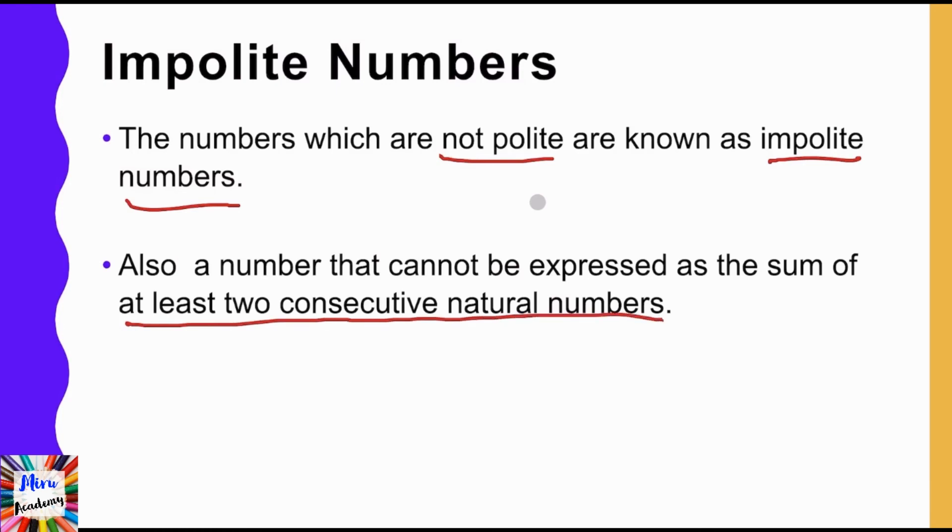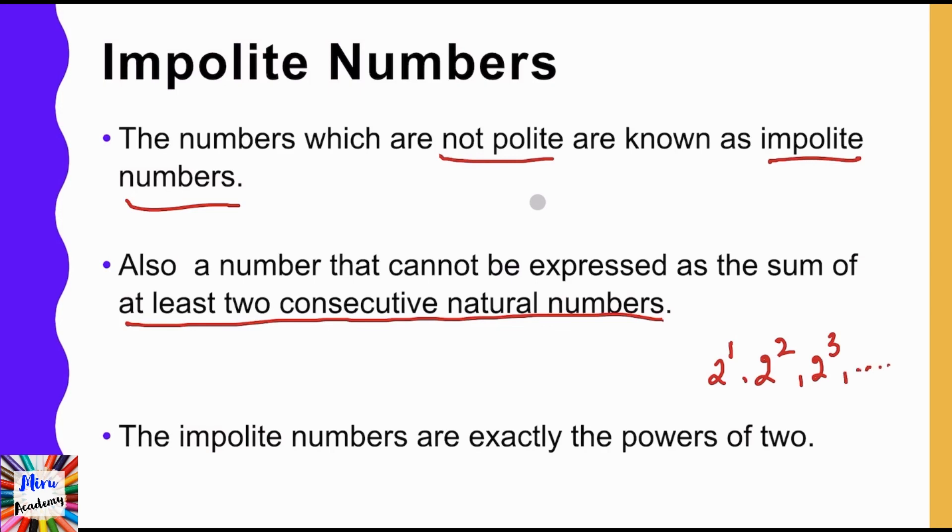Impolite numbers are exactly the powers of 2. So that is 2¹, 2², 2³, etc., are said to be the impolite numbers. So that is all about polite and impolite numbers.